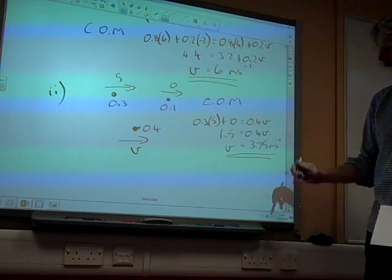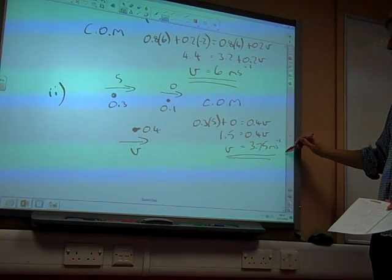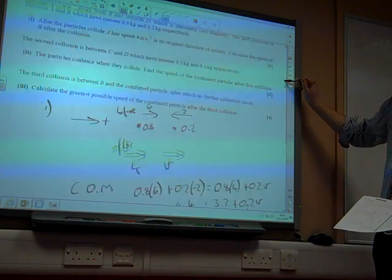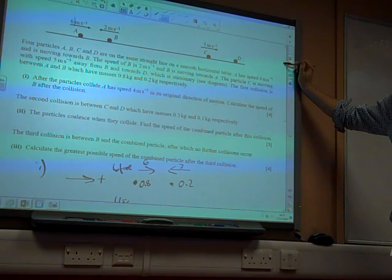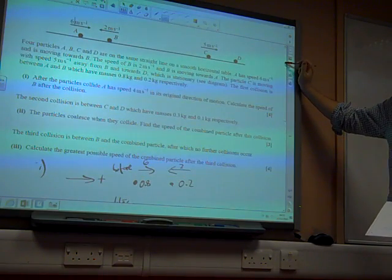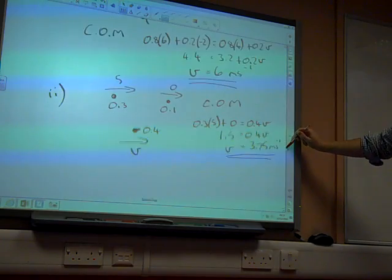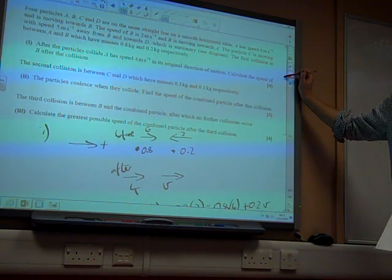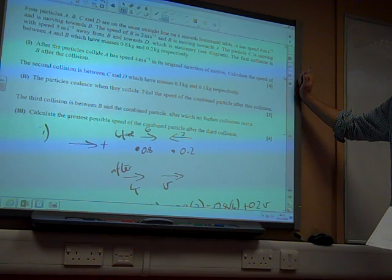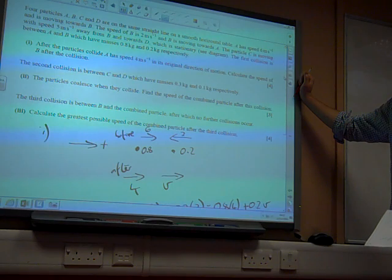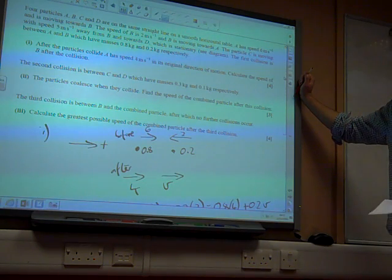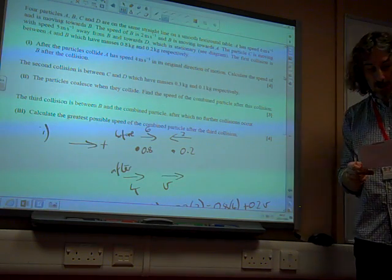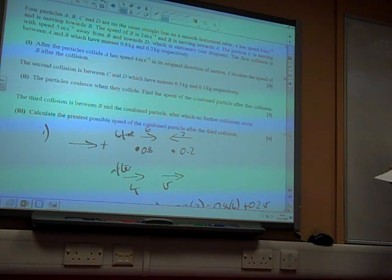So we've now got A moving with velocity 4, B moving with velocity 6, and the combined C and D particle with velocity 3.75. The third collision is between B and the combined particle, after which no further collisions occur.